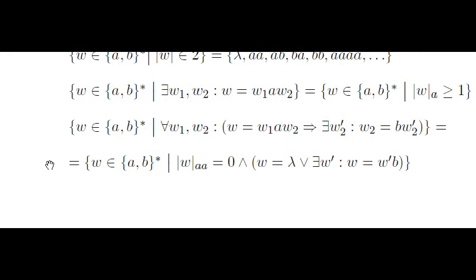The words that we want to capture are those that do not have any subword aa, and moreover do not end with an a. We denote this second restriction by saying that either w is the empty word or it ends with a b.